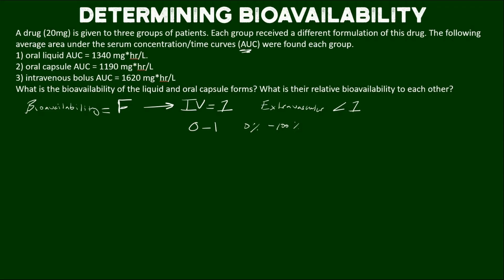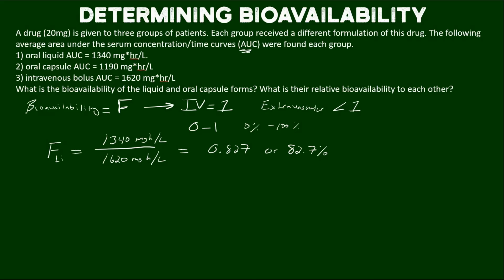With that background, let's figure out the bioavailability for the liquid. We need two pieces of information: the oral liquid AUC and the IV AUC. We need the IV AUC because that's the 100% bioavailability form. So we set up a simple ratio of the oral liquid AUC over the IV AUC. If you do that math you get 0.827, or multiplying by 100 you get 82.7%, meaning the bioavailability of the oral liquid is 82.7%.